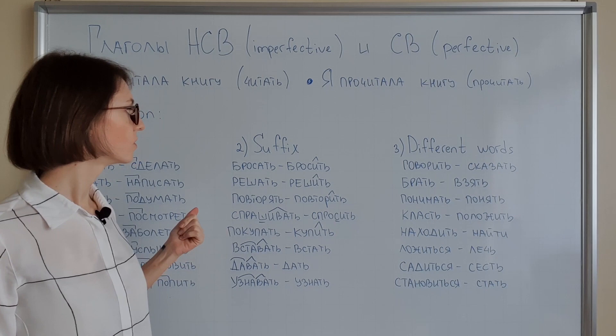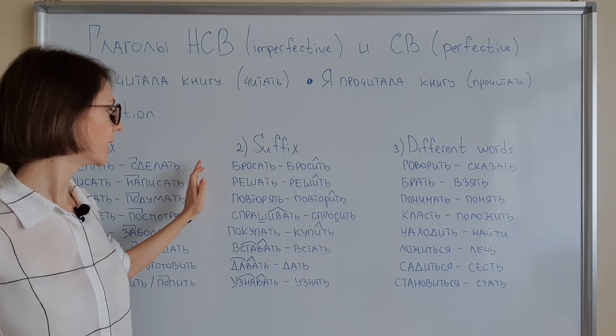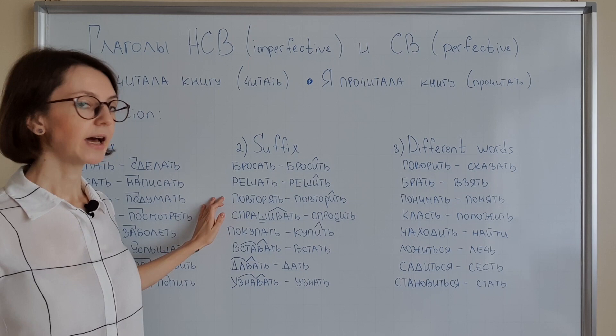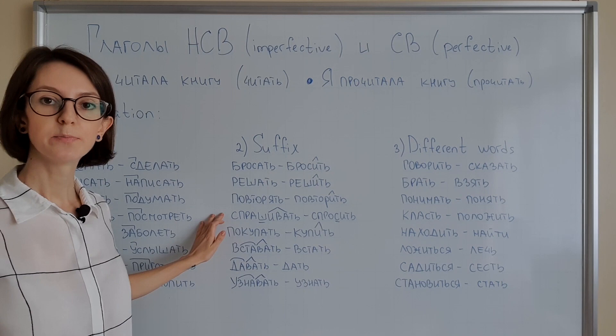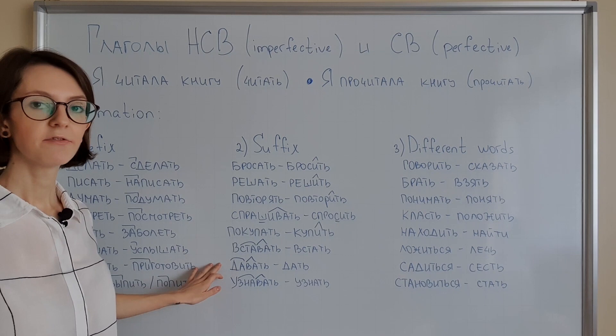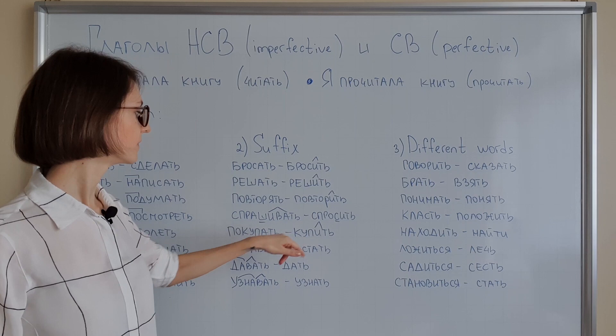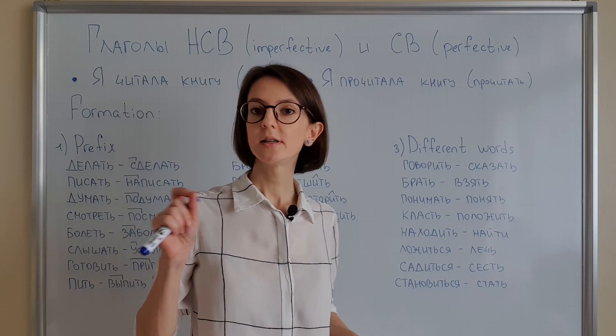Option number two: suffixes. By using suffixes we can also make perfective or imperfective verbs. For example: бросать → бросить (to throw away), решать → решить (to solve), повторять → повторить (to repeat), спрашивать → спросить (to ask), покупать → купить (to buy), вставать → встать (to get up), давать → дать (to give), узнавать → узнать (to recognize). So you can see that these verbs were created with suffixes.